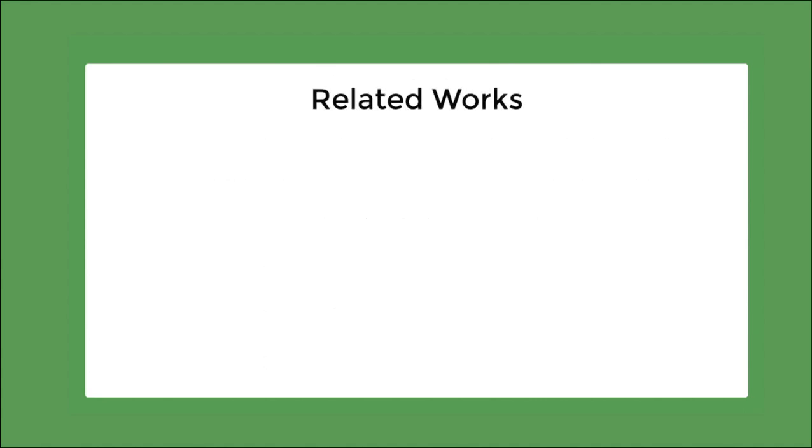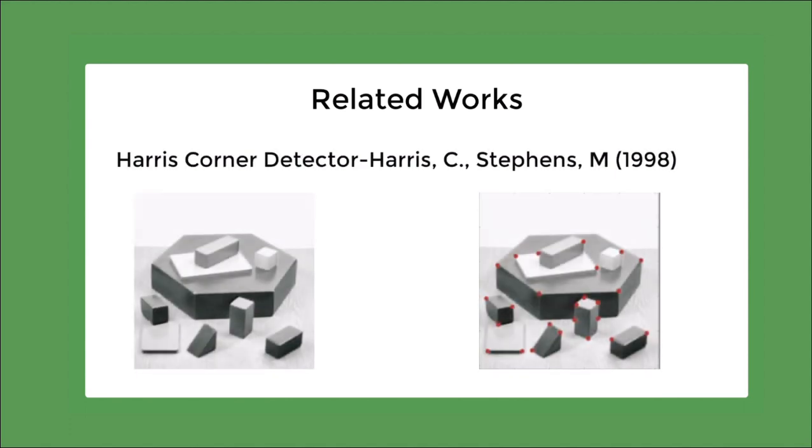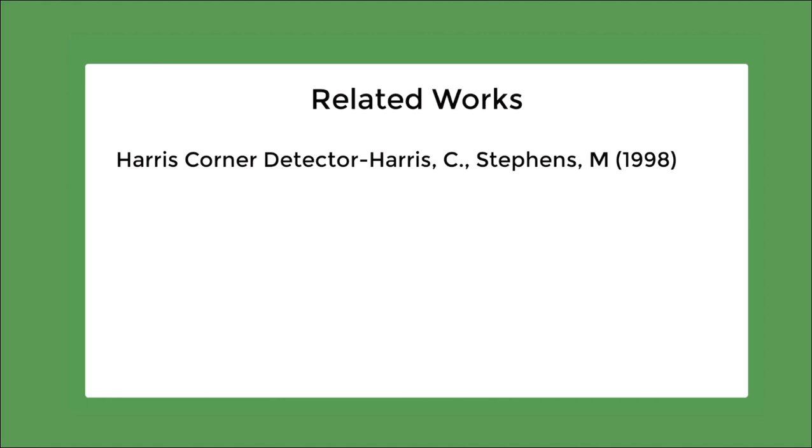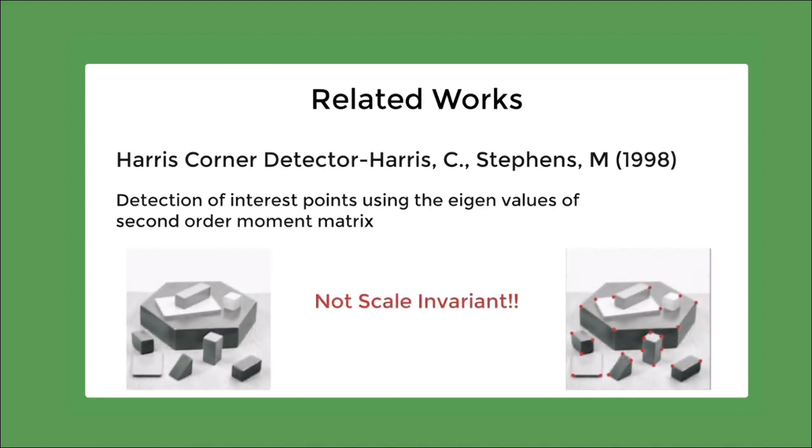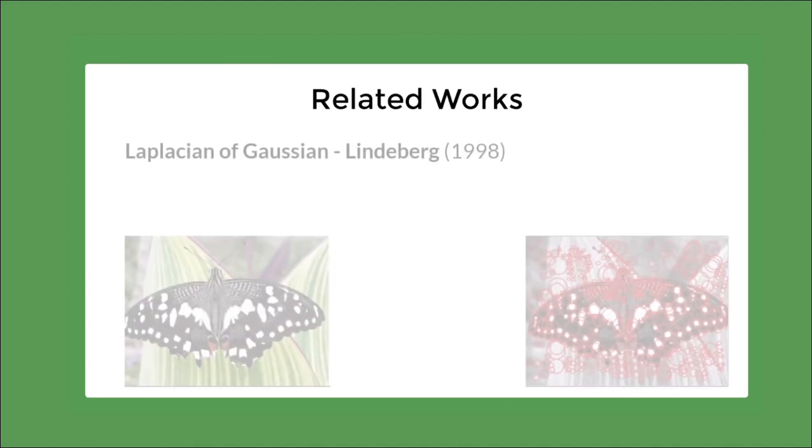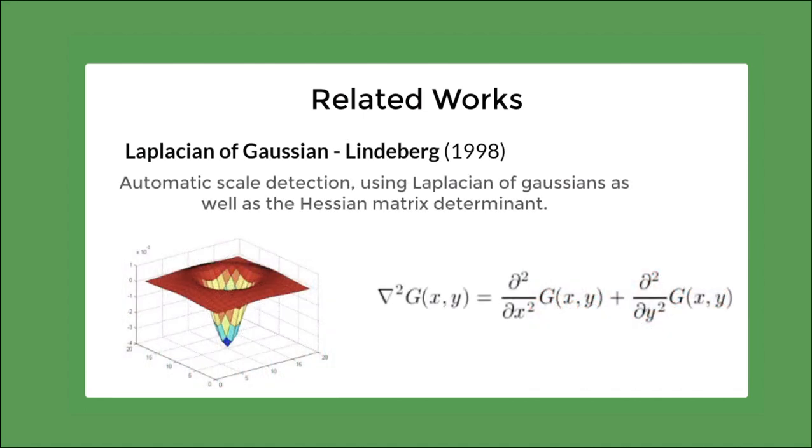Before this paper came out in 2006, many research papers were published in this area which laid the groundwork for the authors of the SURF to come up with it. So we will quickly go through some of the significant ones. The first one is the Harris-Corner Detector. This gave us a method of detection of interest points using the eigenvalues of the second-order moment matrix. However, this method was not scale invariant. The next step is the Laplacian of Gaussian. This gave us a concept of automatic scale detection using the Laplacian of Gaussian as well as the Hessian matrix determinant.